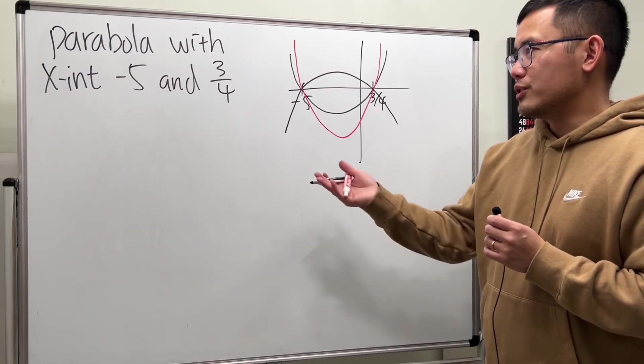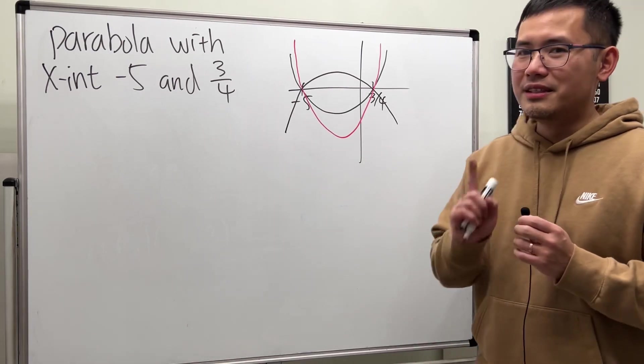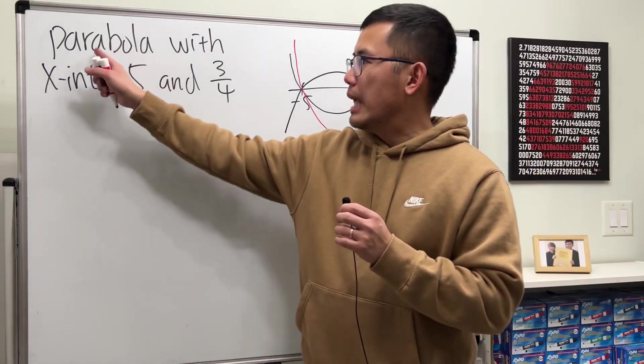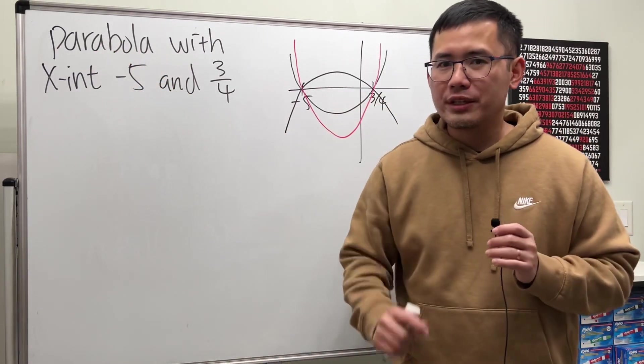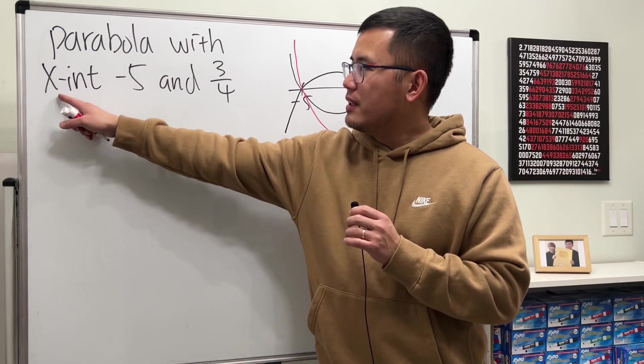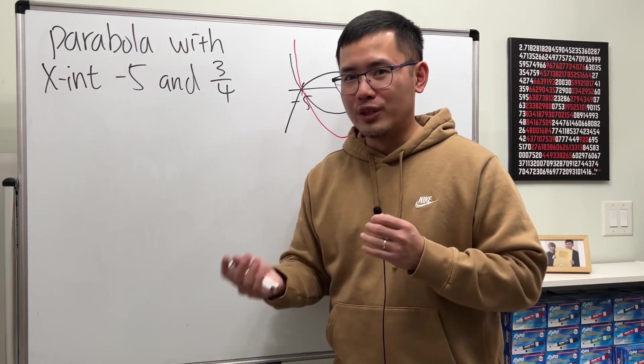But anyway, we're just going to pick the best answer in the answer choices, and this is how we do it. A parabola comes from a quadratic equation. And when we are given the x-intercepts, we can just work this backwards.